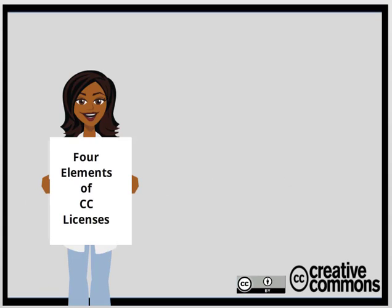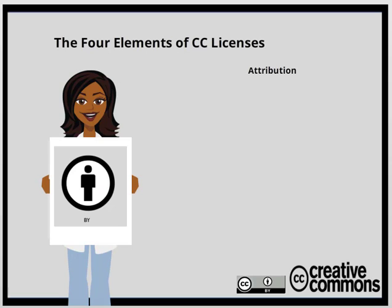Now on to the four elements and their icons. These are the elements combined to create the different Creative Commons licenses. Each has a recognizable icon and an abbreviation, both used in the creation of the licenses. The first element, found in every license, is attribution, or BY. This gives the creator his or her due — that the creation is theirs.